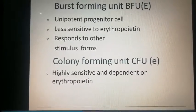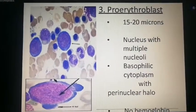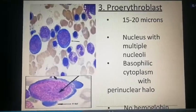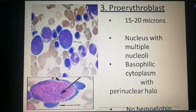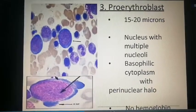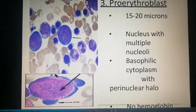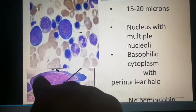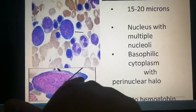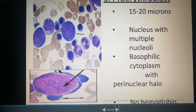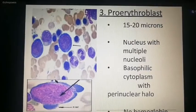The third stage is the proerythroblast: 15 to 20 microns in size, nucleus with multiple nucleoli, basophilic cytoplasm with a perinuclear halo. There is no hemoglobin at this stage.